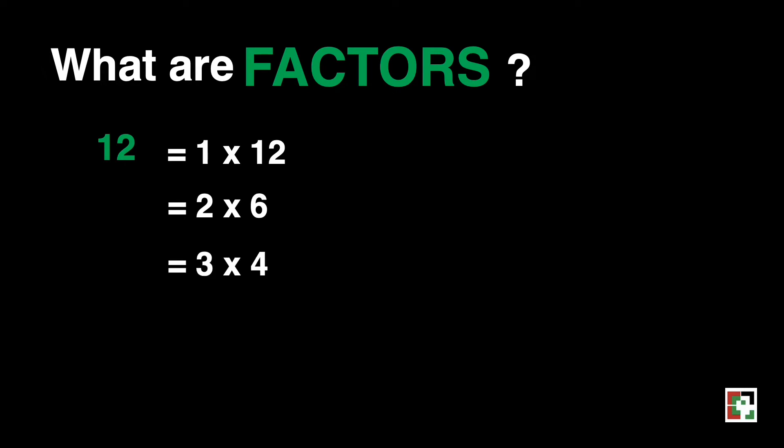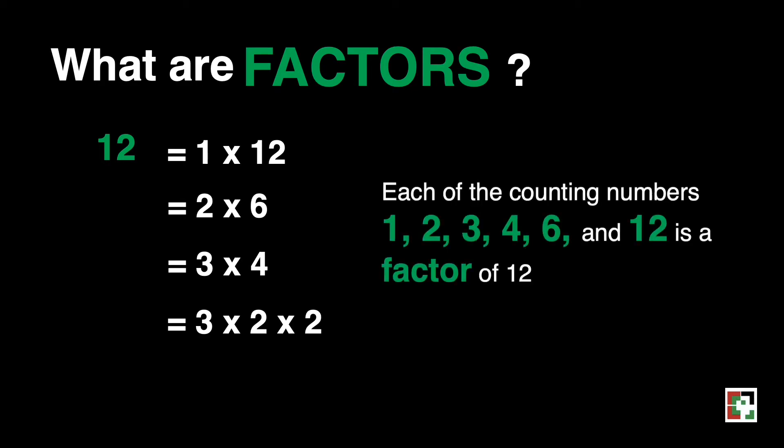So we can say that 2 and 6 are factors of 12, same as through with 3 and 4. You get a 12 as the product and of course, 3 times 2 times 2. Then we can say that each of these counting numbers, 1, 2, 3, 4, 6, and 12 is a factor of 12.